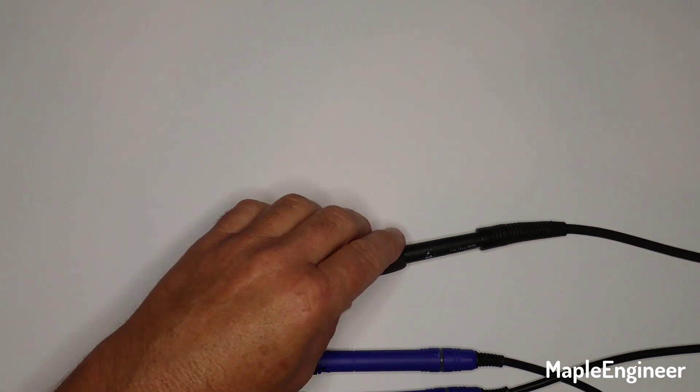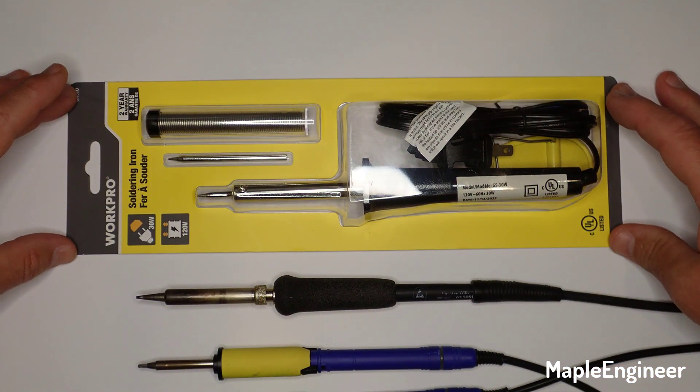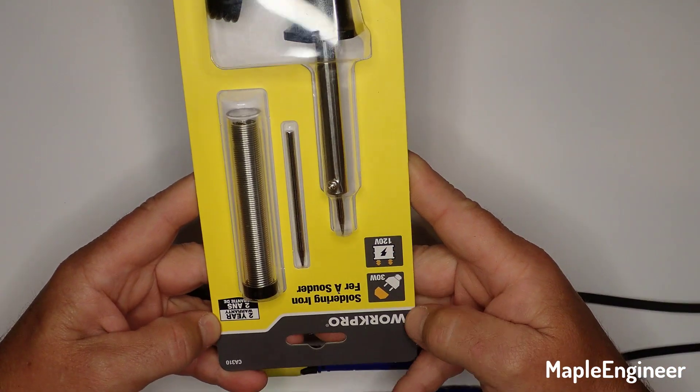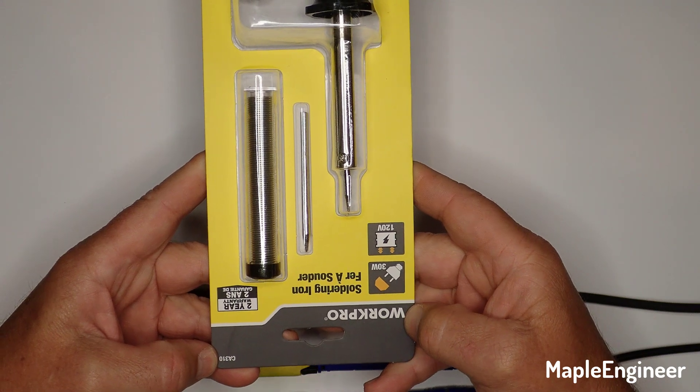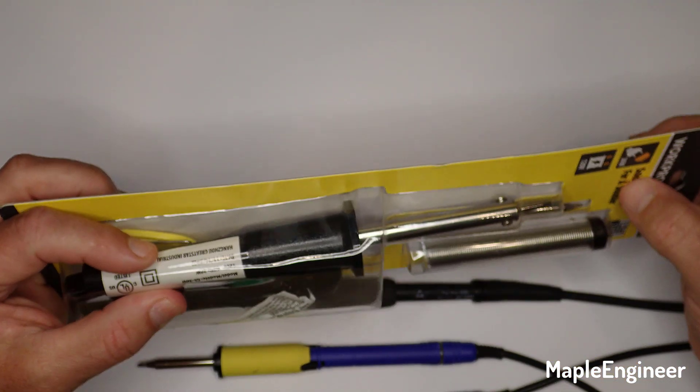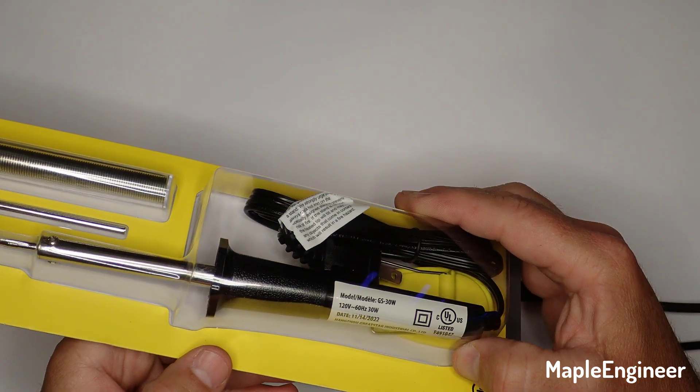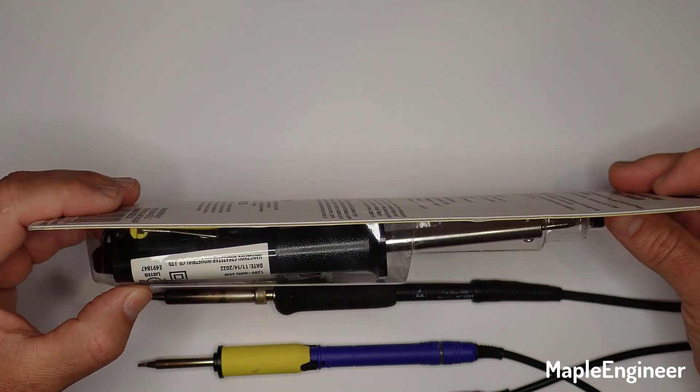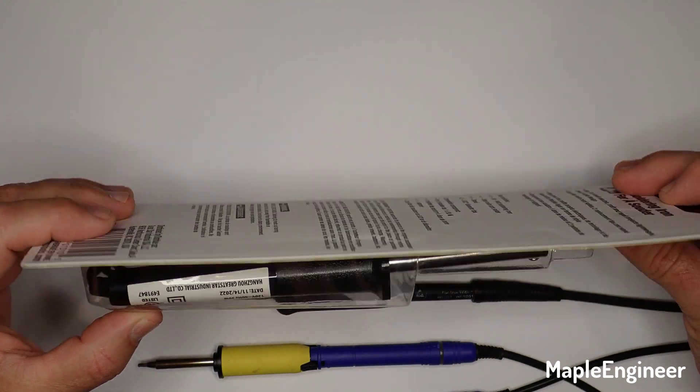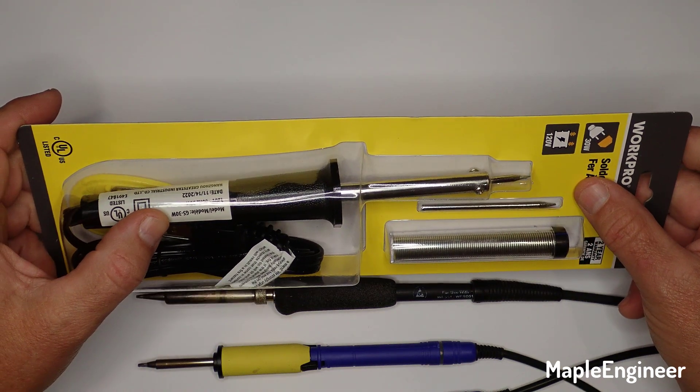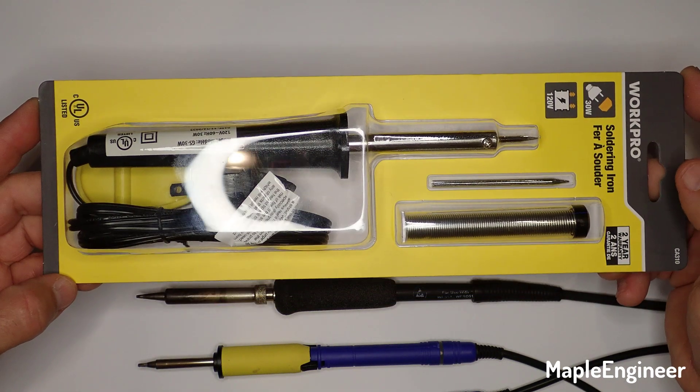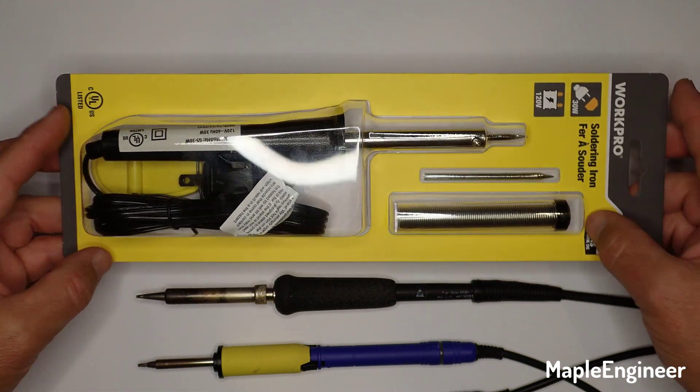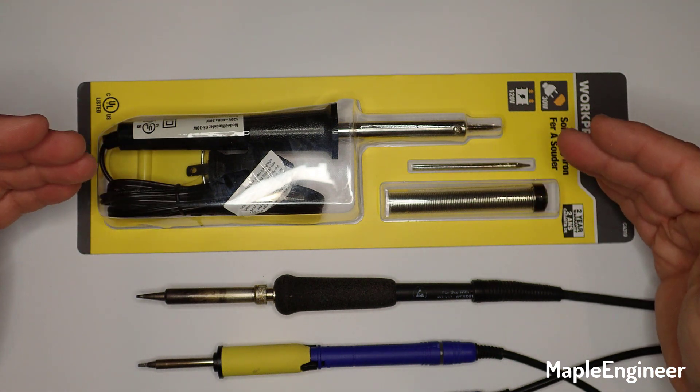So, I went to Walmart, and I bought this. And it is a WorkPro CA310, which if you look at the label on here, it's actually a Hangzhou Great Star Industries part number GS30W. So you can search for GS30W and find a whole bunch of soldering irons that appear to be essentially the same thing.